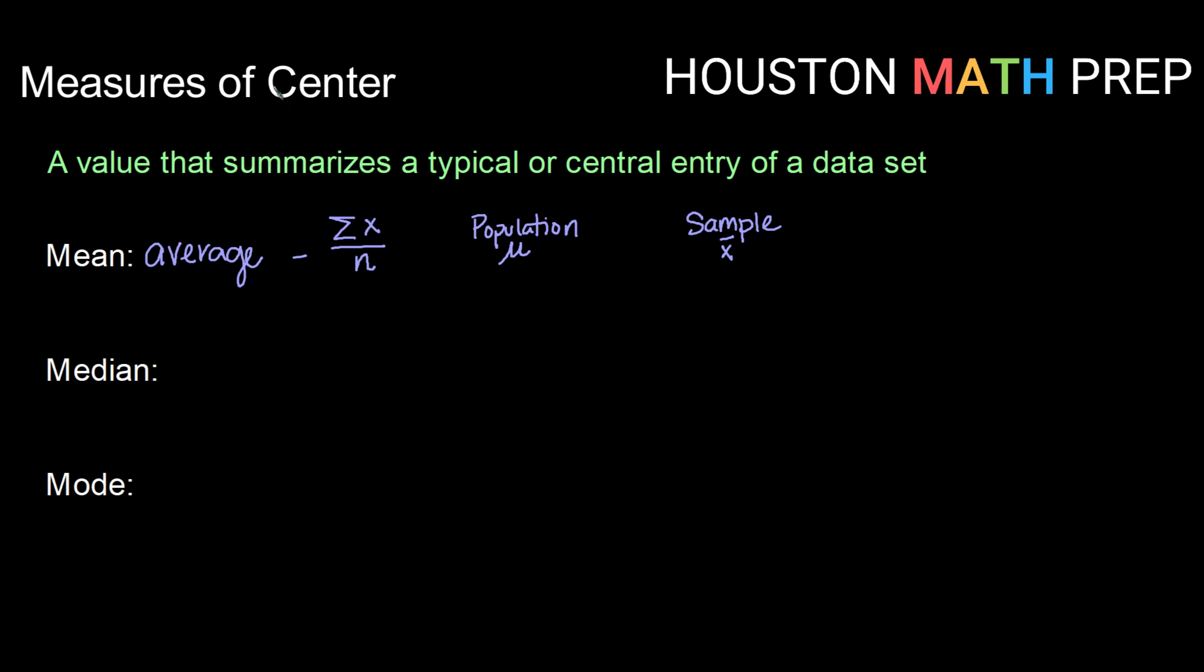Now the next measure of center that we can encounter is the median. The median is the middle value when data is ordered. So what that means is if we take our values and we place them in order from least to greatest, then the value in the middle, the direct center, would be our median.